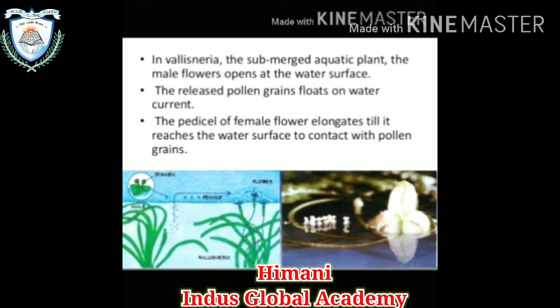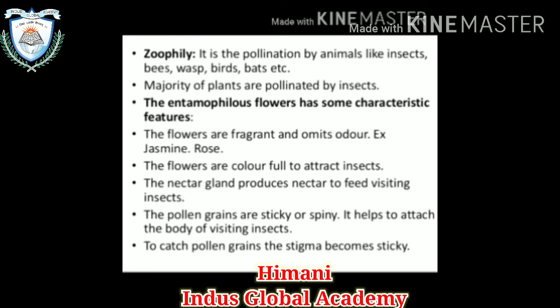In Vallisneria, a submerged aquatic plant, the male flower opens at the water surface and releases pollen grains that float on the water and flow with the water current. The peduncle of the female flower elongates until it reaches the water surface to make contact with the pollen grains. Now, zoophily — pollination by animals such as insects, bees, wasps, birds, bats, etc.